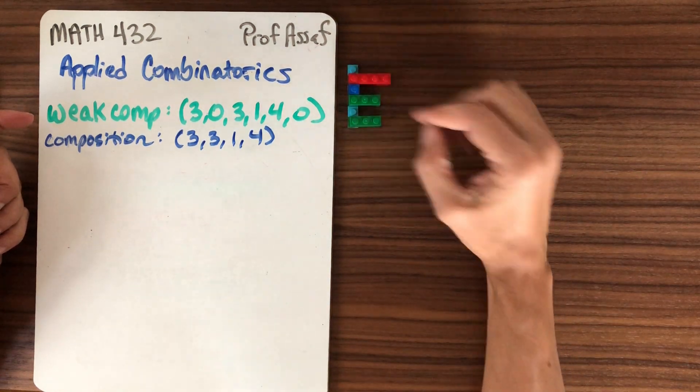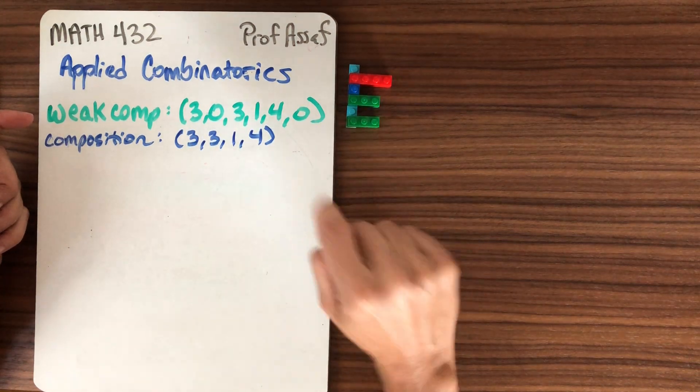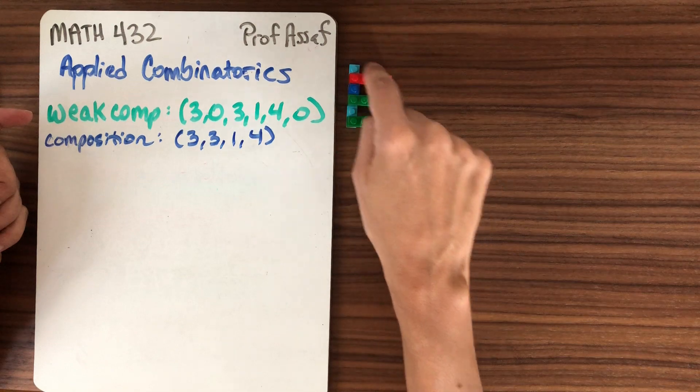We can think about it graphically by thinking about each of these parts as a row length. So this would be a row of length 3, 0, 3, 1, 4, 0.